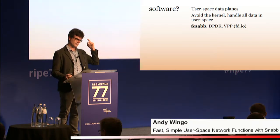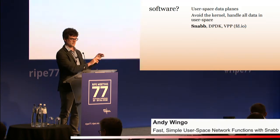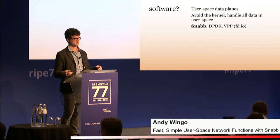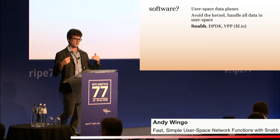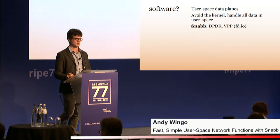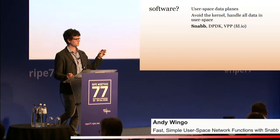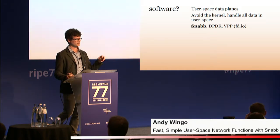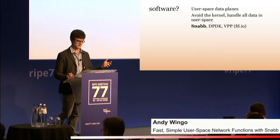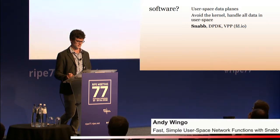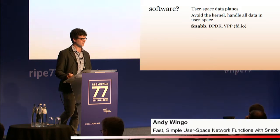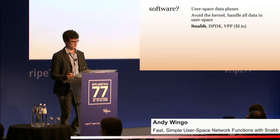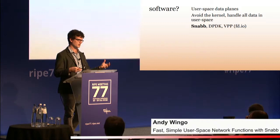When I talk about network functions, I just mean something that's on the network — an abstraction over what you would slot into a rack in the past, but now implemented in software. User space data planes mean that the Linux kernel is not involved in processing packets. What this gives us is speed and customizability. It's hard to get the Linux kernel to change what it does, and it's hard to get really high throughputs out of packet processing in the kernel.